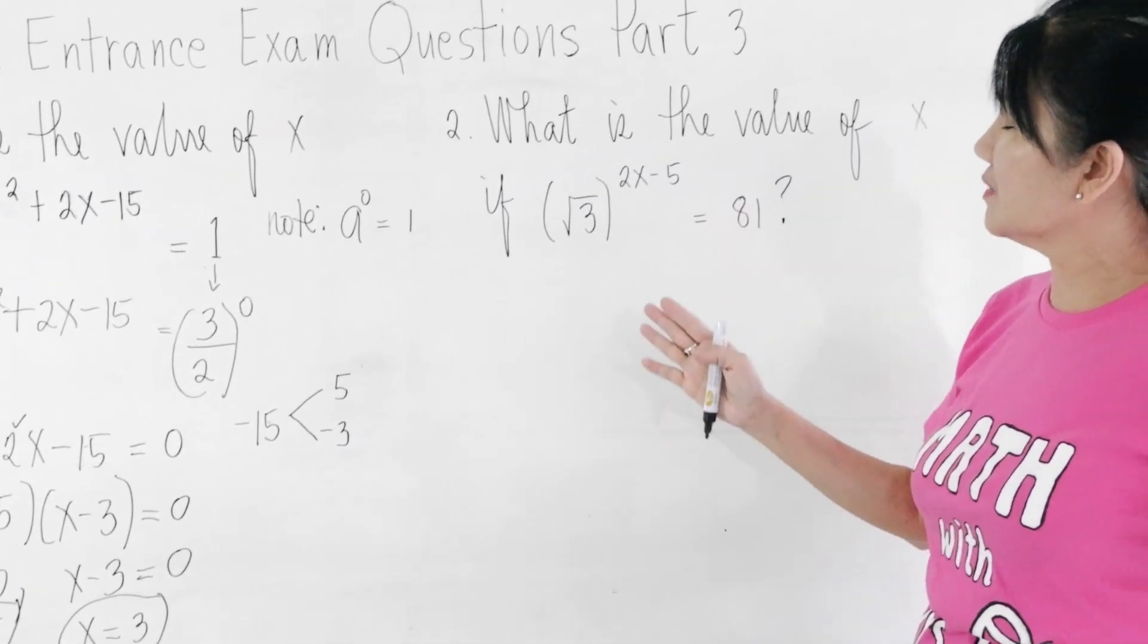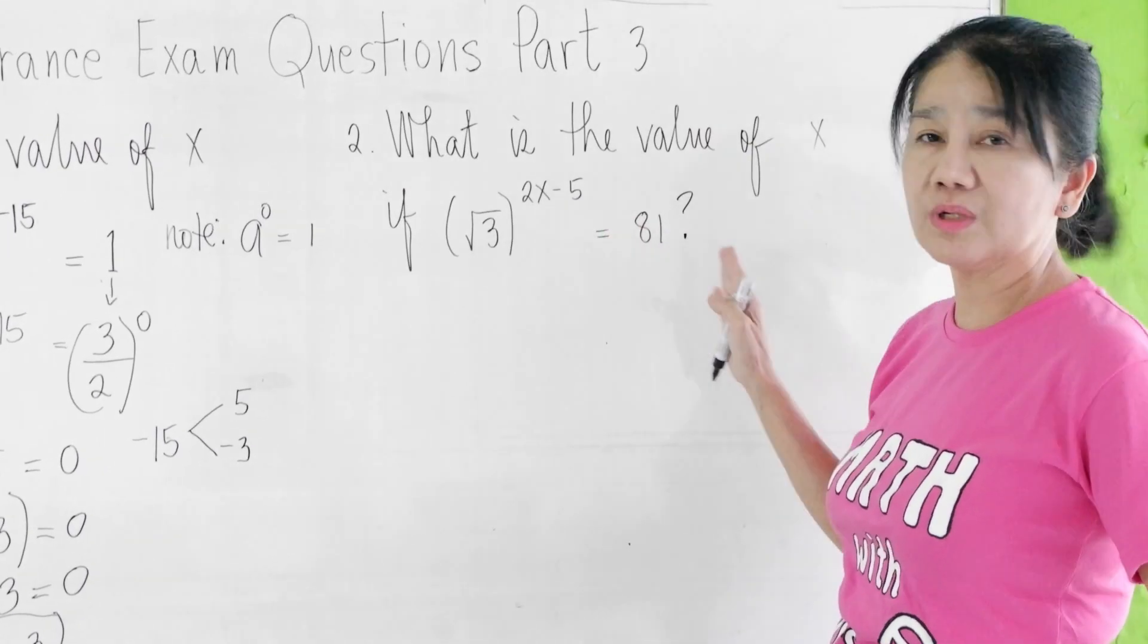What is the value of x if √3^(2x - 5) = 81?